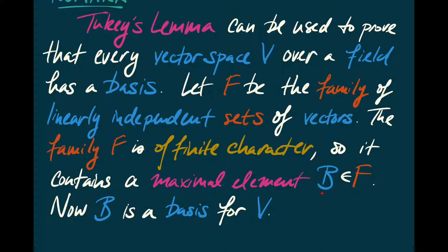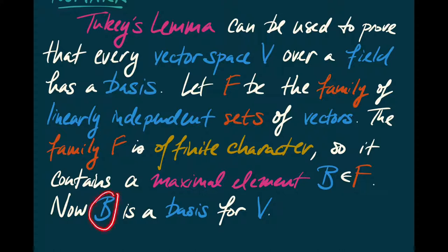F has a maximal element B — it might have many different maximal elements, but I only need one. That means if I add a single vector to B, I'll produce a set that is no longer linearly independent. If you unpack that, it precisely means that B is a basis for my vector space V — that is to say, every element of V can be written as a finite linear combination of elements of B.